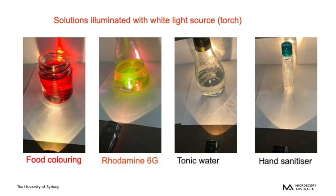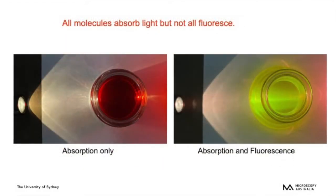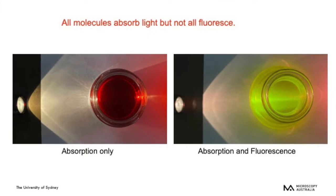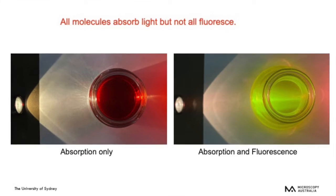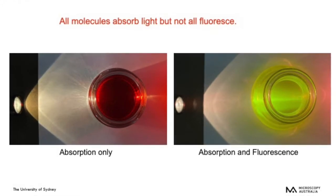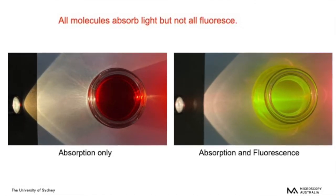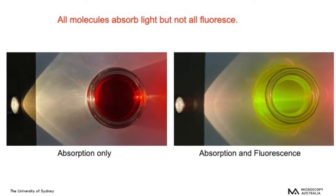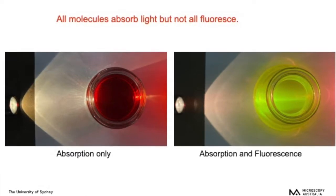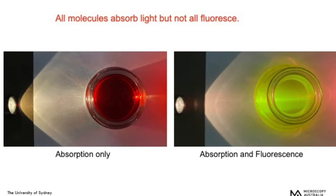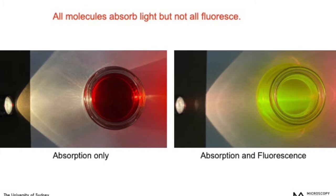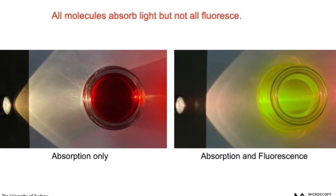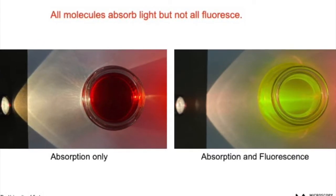When we look from above onto the red food colouring, we can only see red light being transmitted through the sample, with slight reflection on the sides. However, looking at the Rhodamine 6G solution, we see light transmitted through but also a green-yellow fluorescence in the middle of the sample. So this sample is both absorbing the light and also fluorescing.